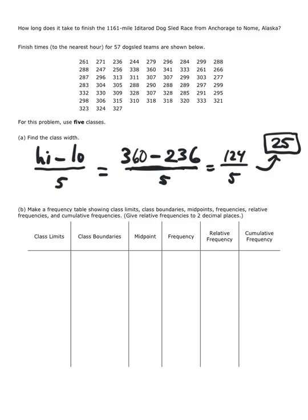Now to set up the class limits, let's take our smallest value, which was 236, and what we'll do is fill out all the lower ends of the class limits. We have a class width of 25, so if you add 25 you're going to get 261, add 25 you get 286, add 25 you get 311, and then finally add another 25 you get 336.